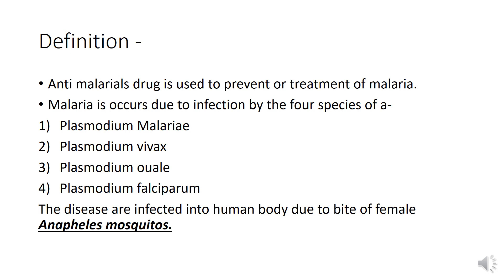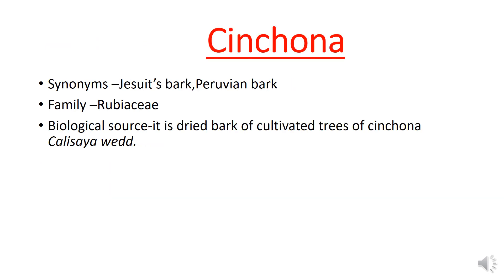The next plant is Cinchona. Its synonyms are Jesuit's bark and Peruvian bark. The family is Rubiaceae. The biological source is Cinchona calisaya bark — this plant provides a dry bark.